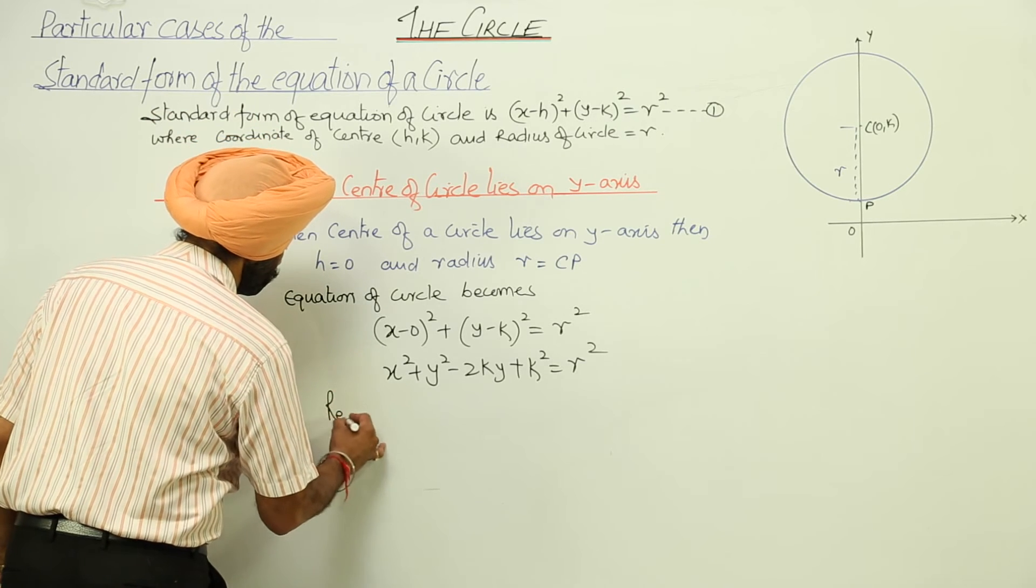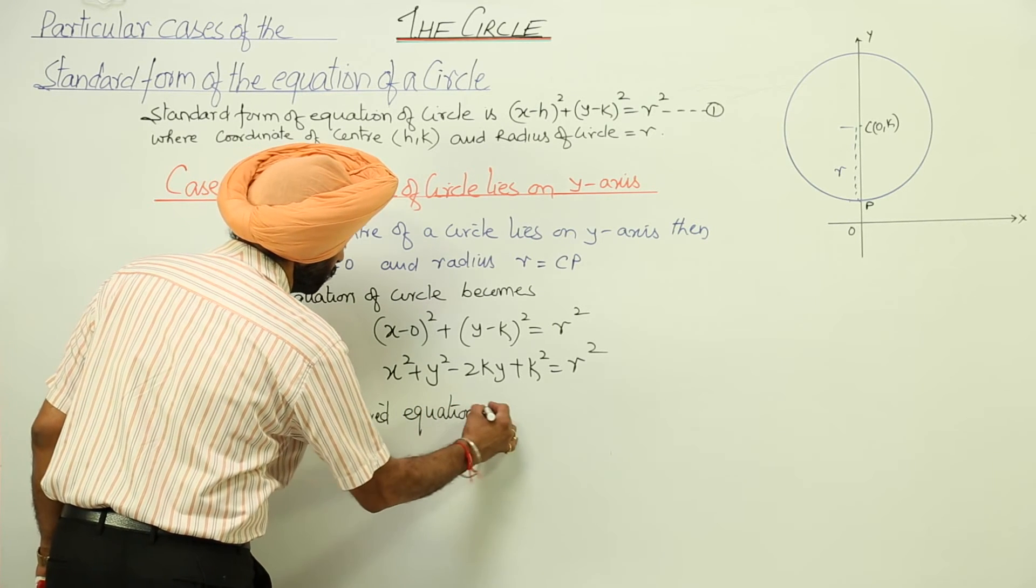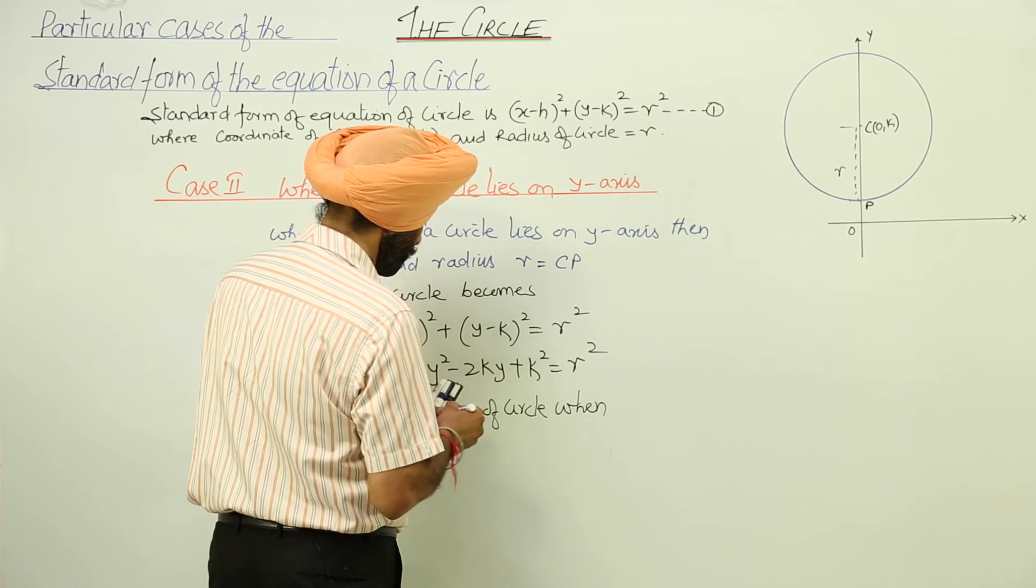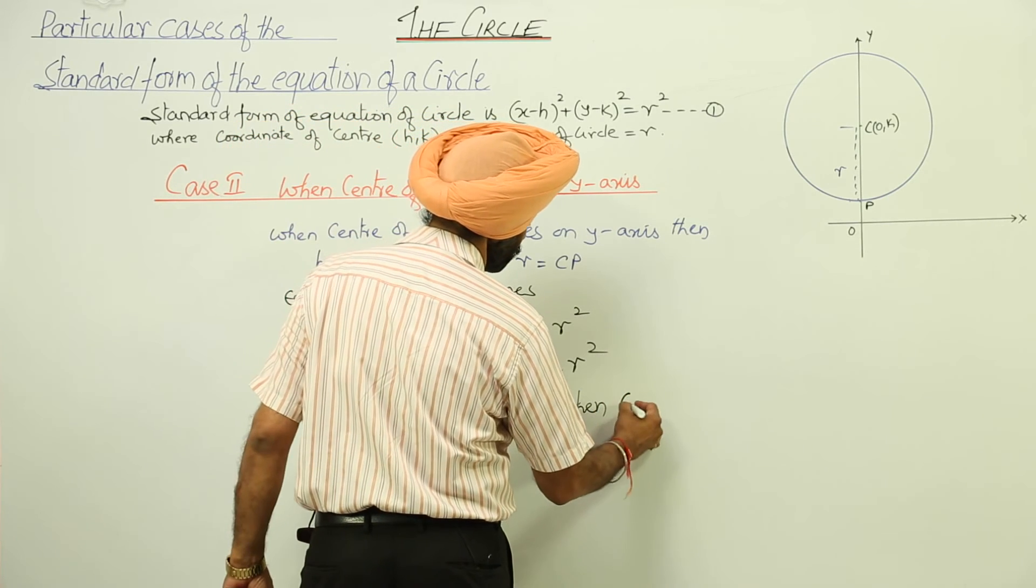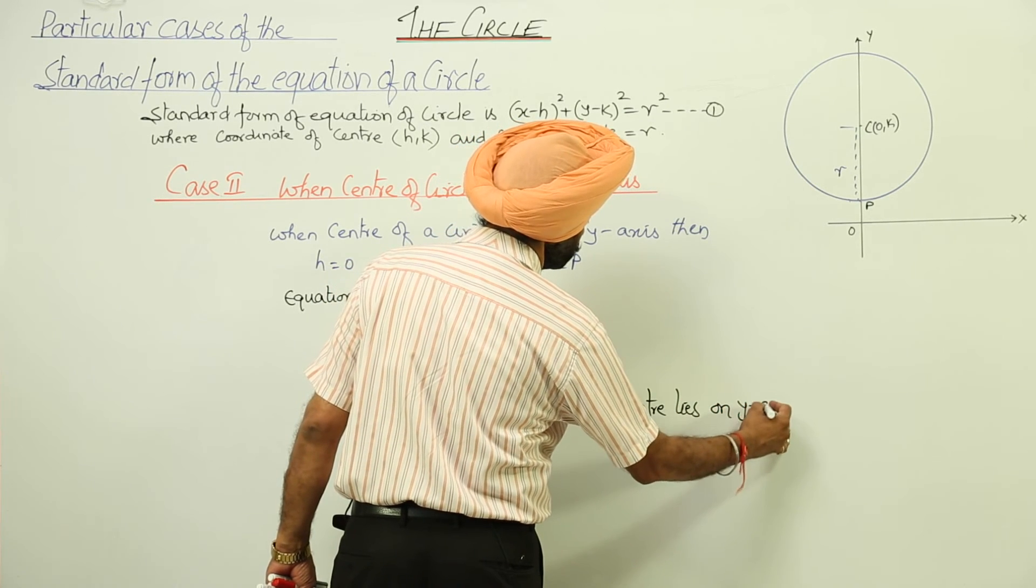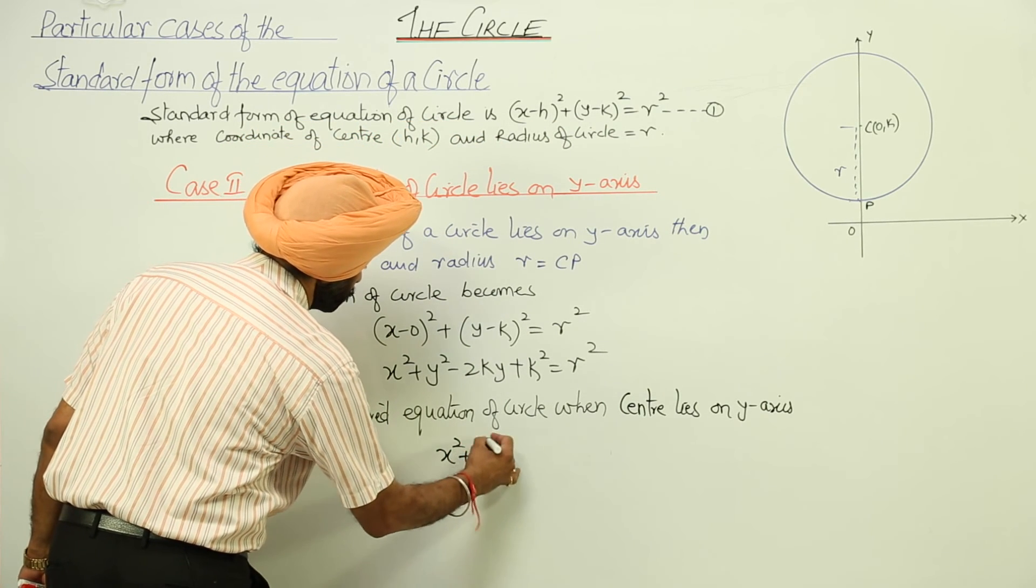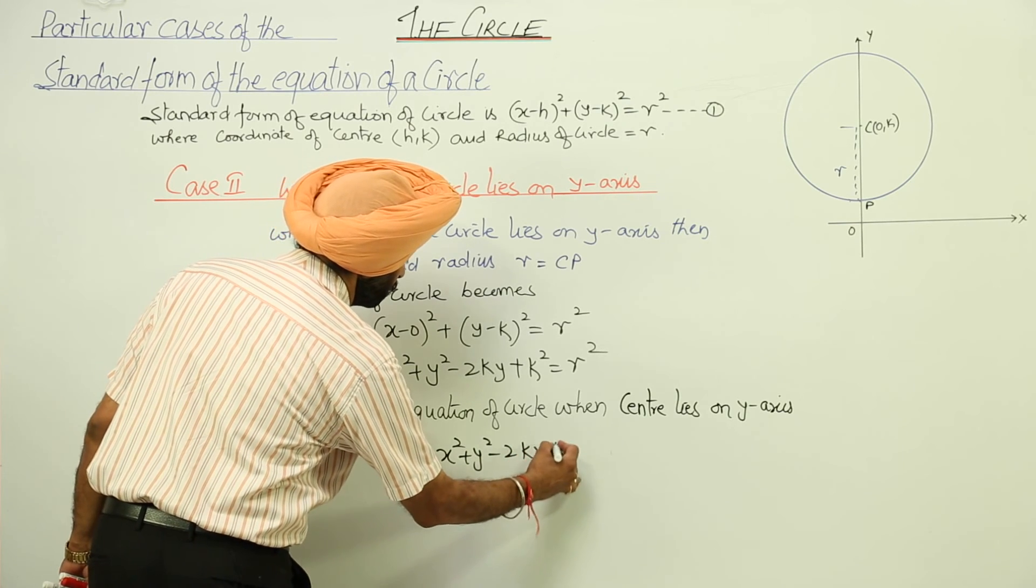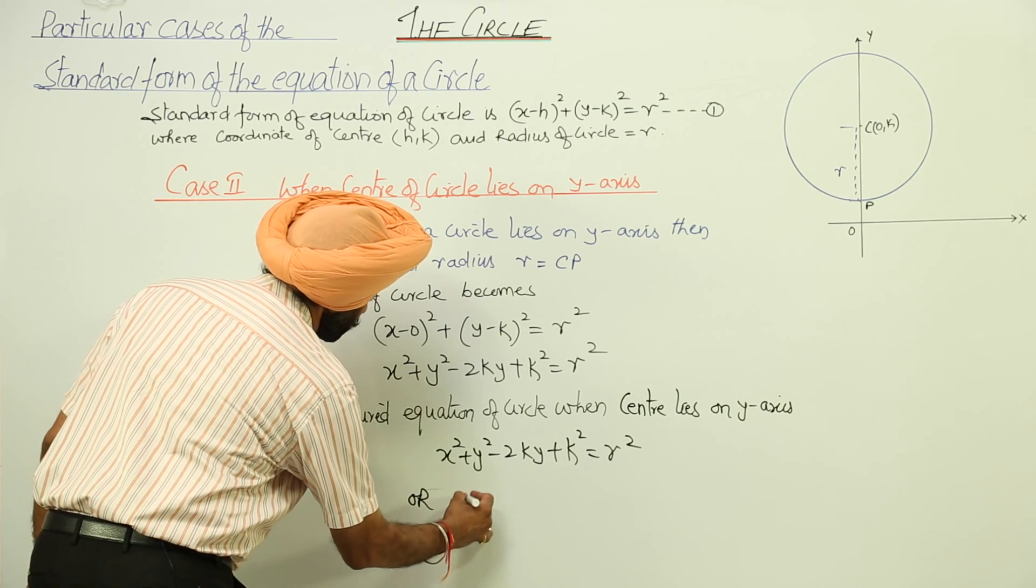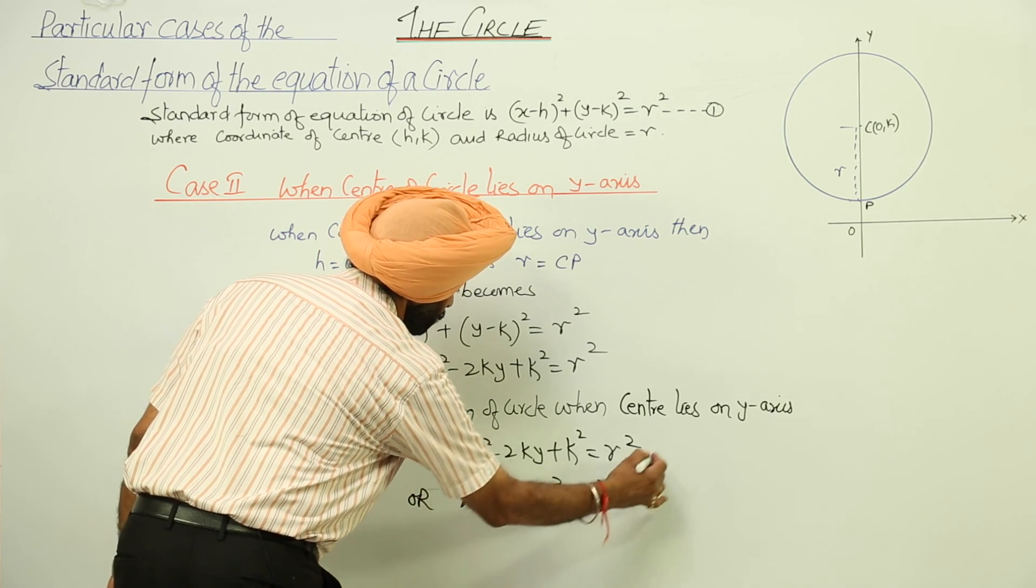Required equation of circle when center lies on y-axis: it is x² + y² - 2ky + k² = r², or you can just write it as x² + (y - k)² = r², any one.